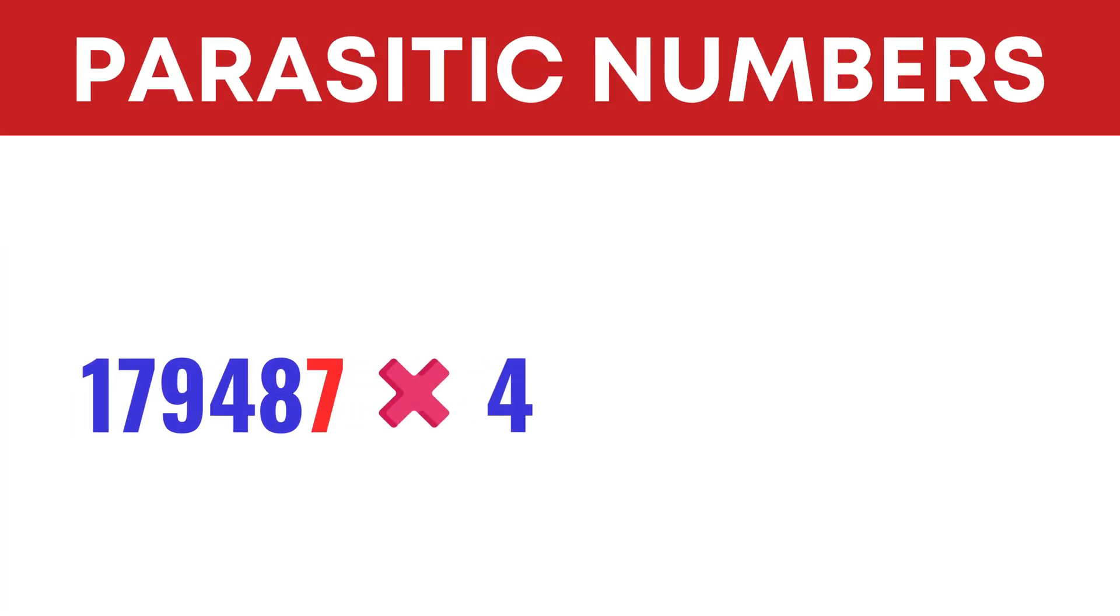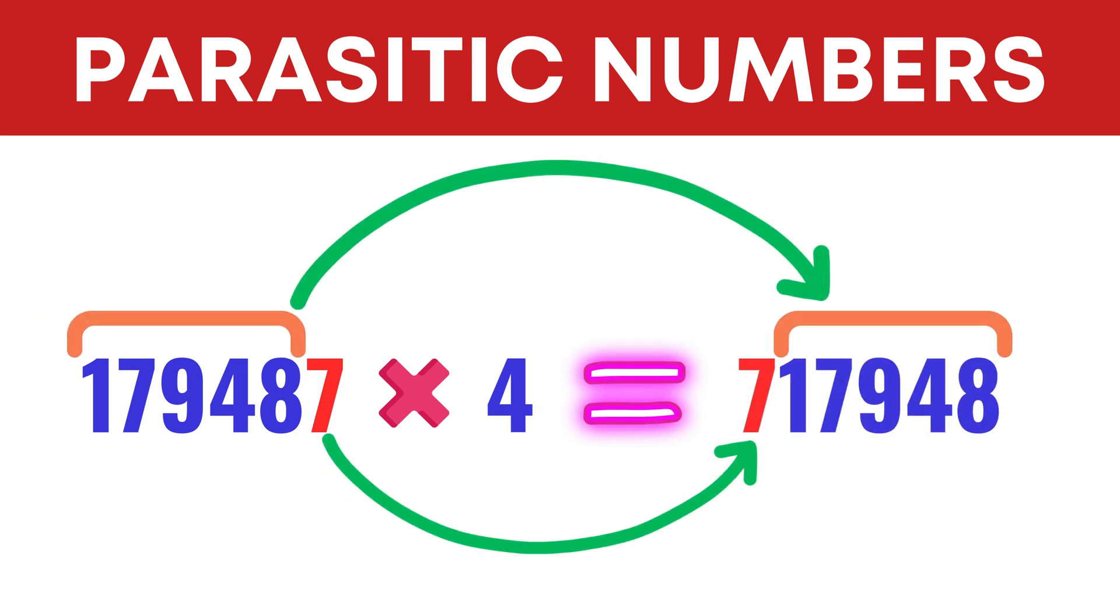4 multiplied by 179487 we get 717948. Look at the digits of the result and compare it with the original number. We have the same digits in both the numbers. Since we multiplied the number 179487 by the number 4, 179487 is called 4-parasitic. Leading zeros are not allowed in parasitic numbers.